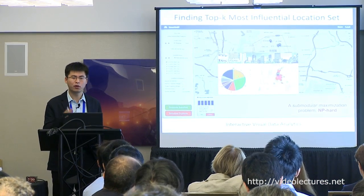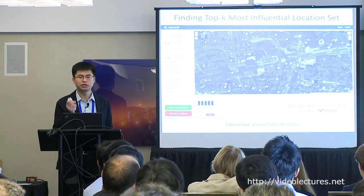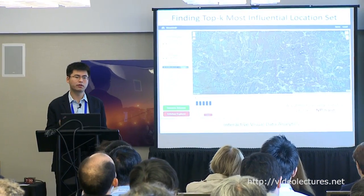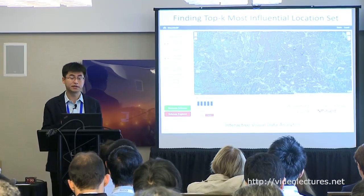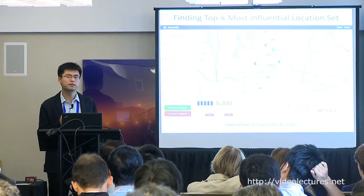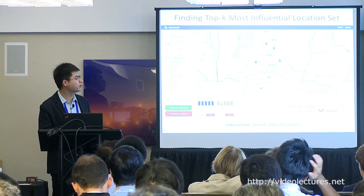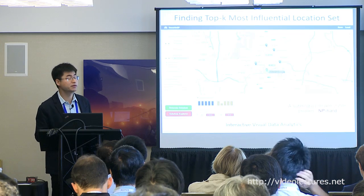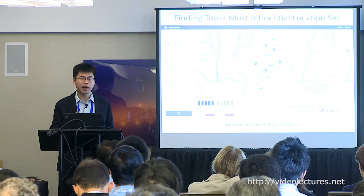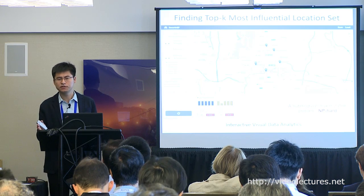We also need to consider the points of interest around the area. For example, if we need to spend a couple of hours charging our vehicles, where can people go? We need to check whether there is a restaurant or shopping mall nearby. If there are no such facilities, we remove those results and let the algorithm regenerate. This is an interactive data mining process — interactive visual data analytics supported by cloud computing.